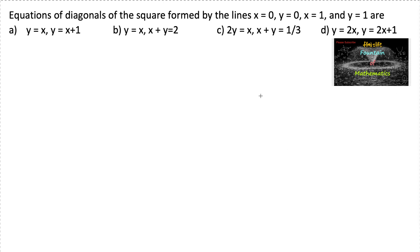x is equal to 0 is the vertical line y-axis and y is equal to 0 is the horizontal line x-axis. x is equal to 1 is the line which is drawn parallel to y-axis at a distance of 1 unit.